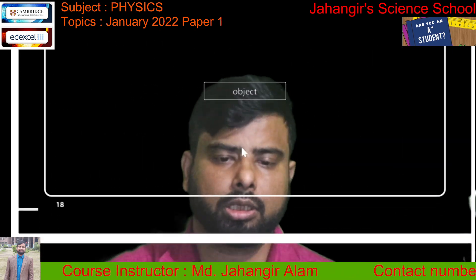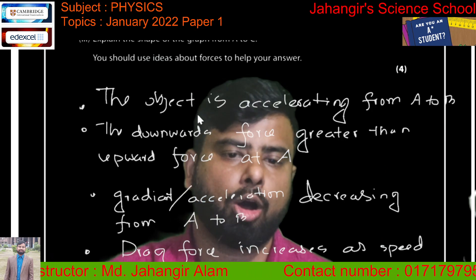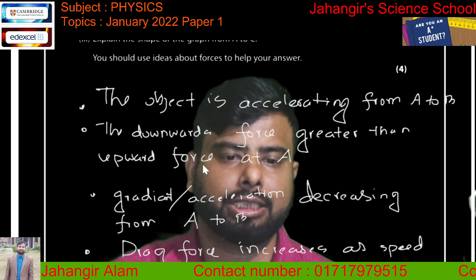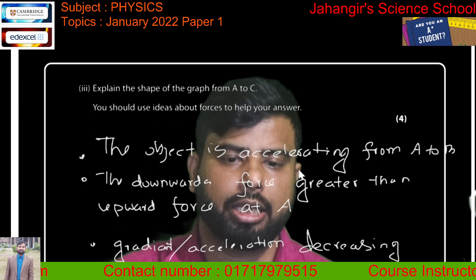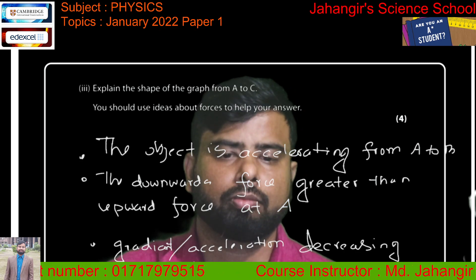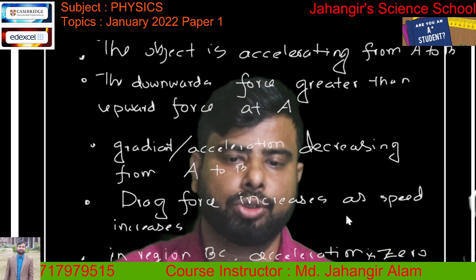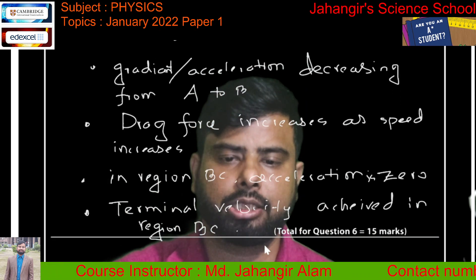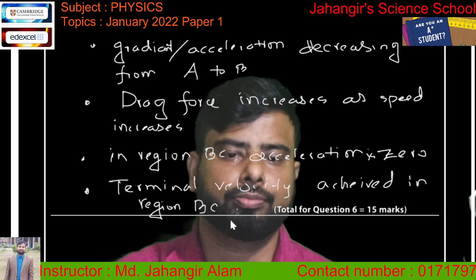To summarise: from A to B the object accelerates because the downward force is greater than the upward force. The gradient or acceleration decreases from A to B as drag force increases with speed. In region BC, the acceleration is zero — terminal velocity is achieved. Thank you.